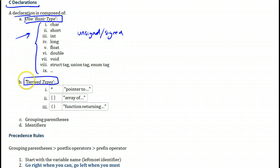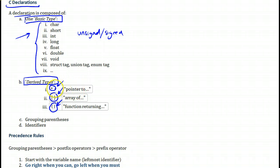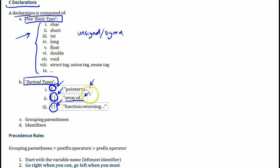Then you could have some derived types such as the pointer, the array, or the function within your declaration. When you encounter any of these derived types, this is how you're going to read them. For the pointer you will say 'pointer to', because it will always be followed by something the pointer points to. When you encounter the array you'll say 'array of', and for the function you'll say 'function returning' and then say what it returns.